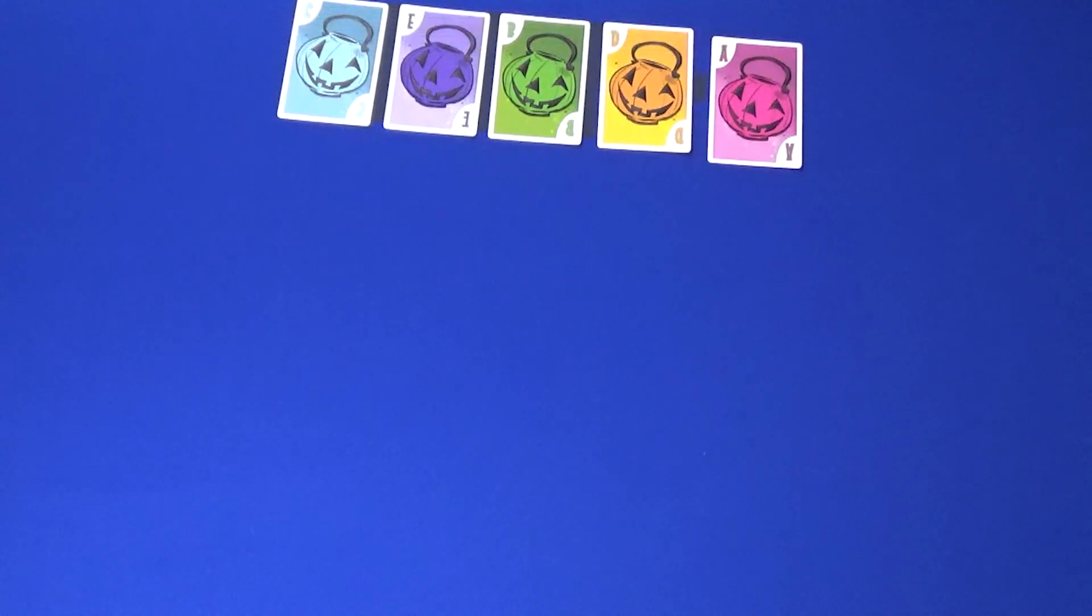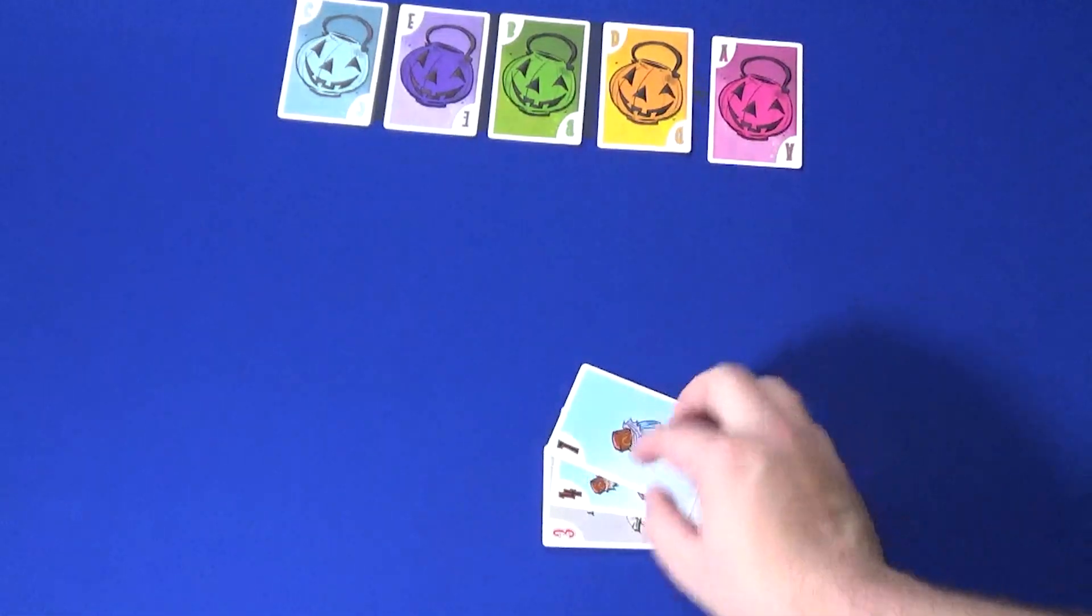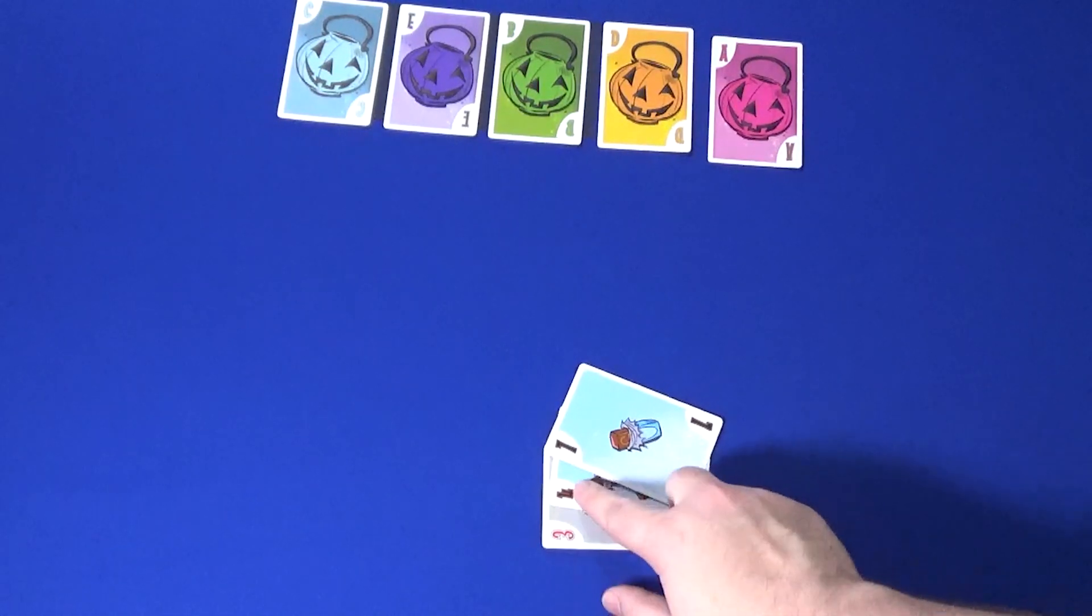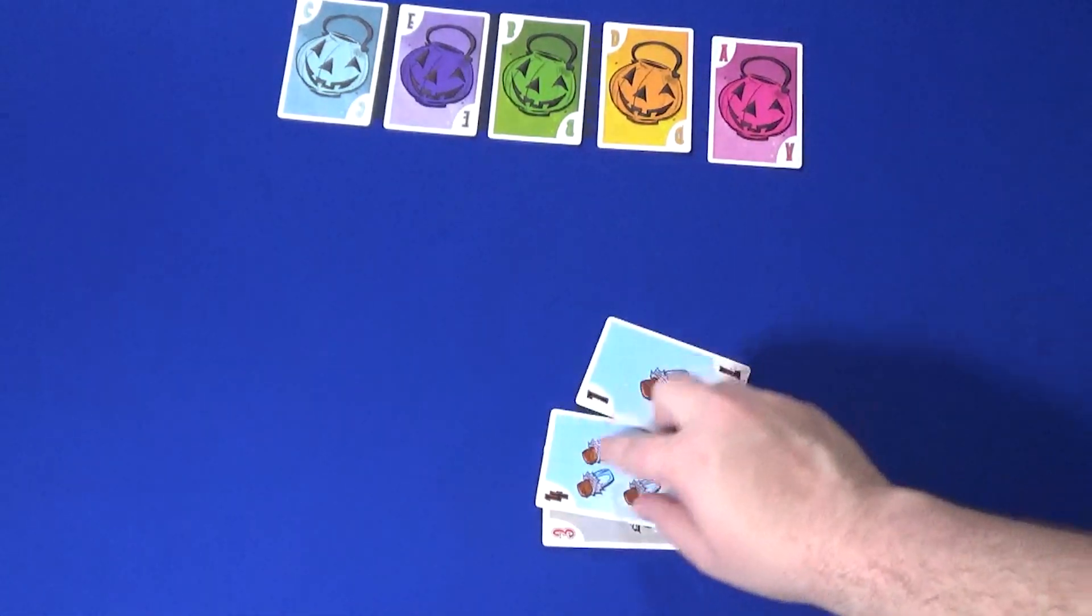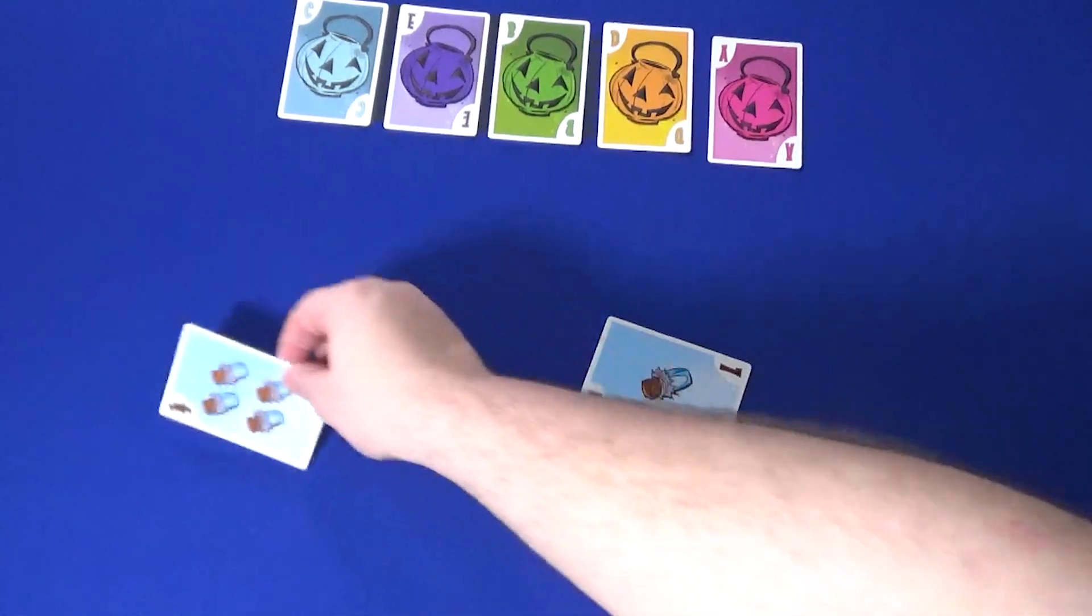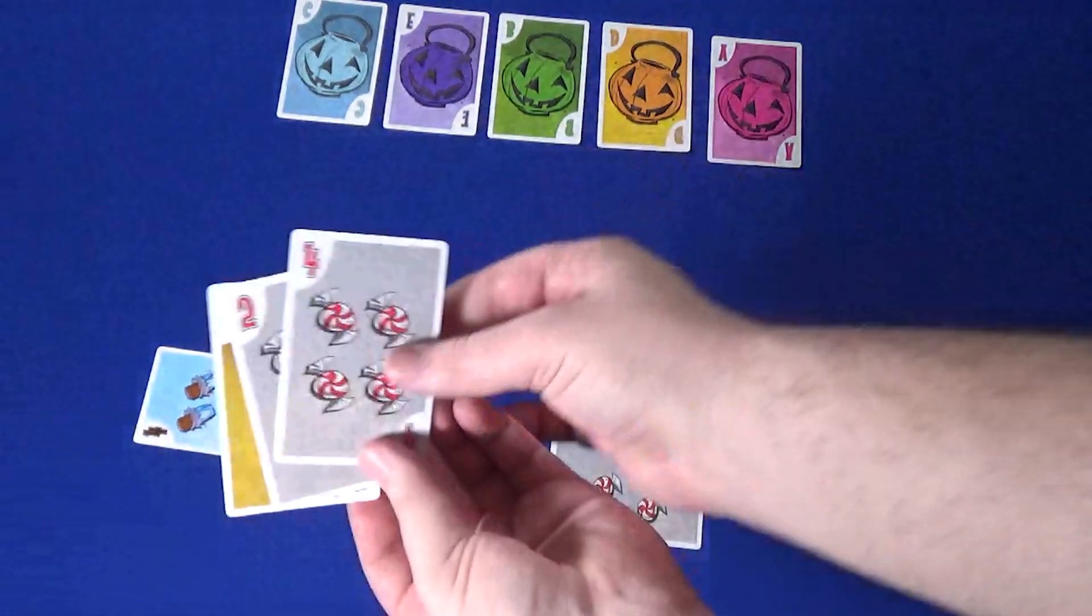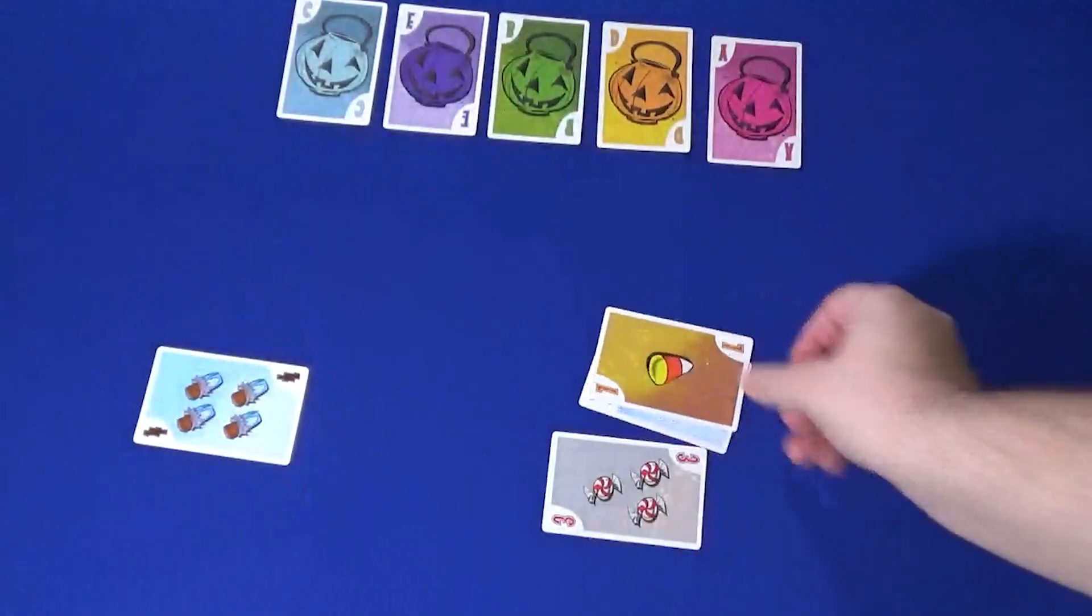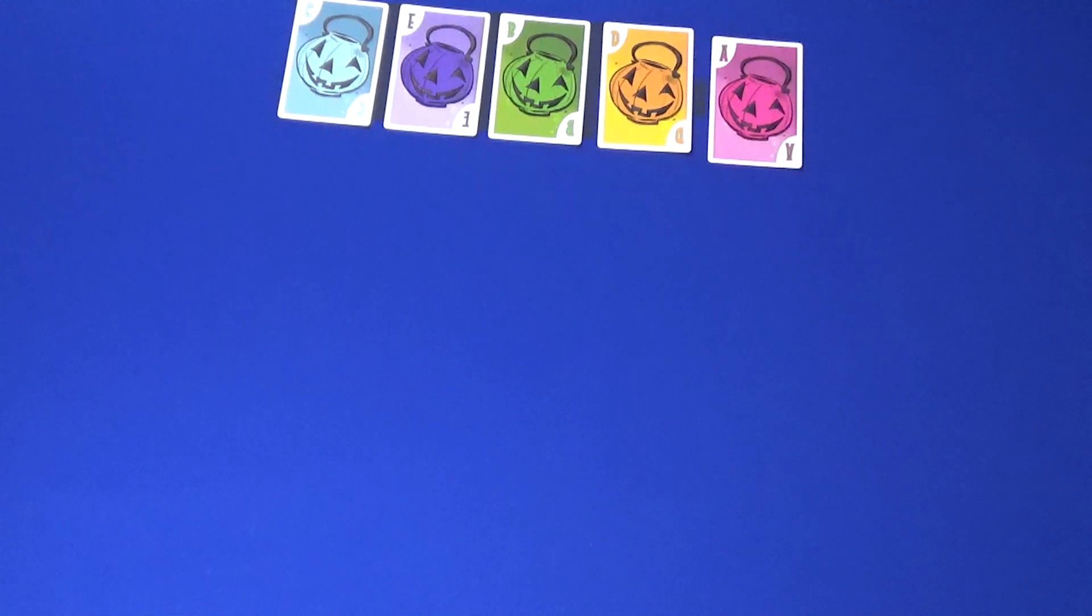There are also two experienced rules that you might be interested in. The first is at the beginning of the game, the player who would take the first turn must give the player going last in turn order their highest valued candy card, while the player going last must give the player that's going first their lowest valued candy card.